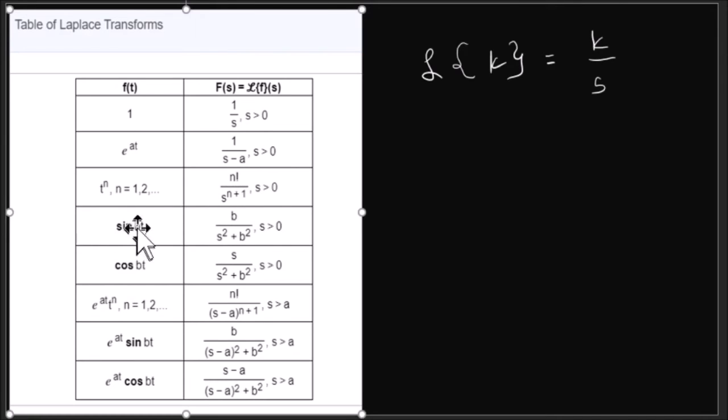Then we have sine bt. In our example it is sine kt, that is b over s squared plus b squared. Don't be confused with b or k because they are just constants. Then cosine bt, this is s over s squared plus b squared.